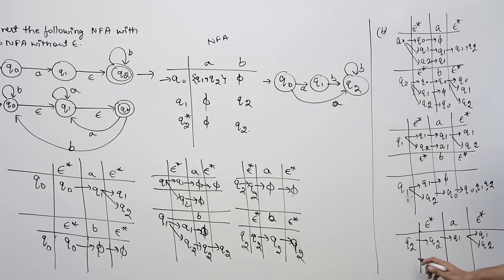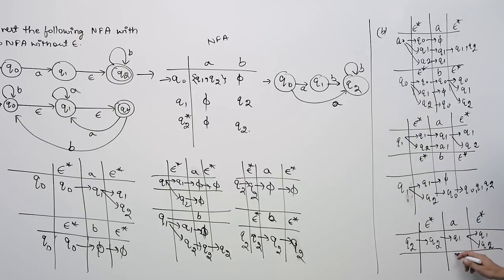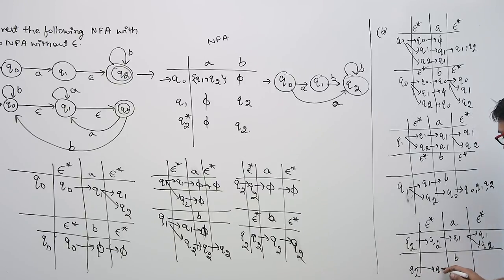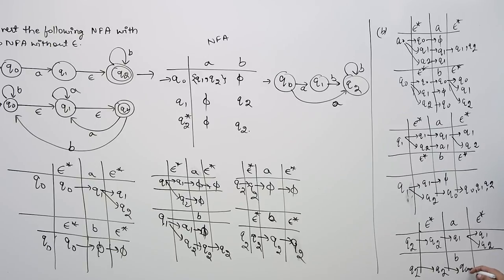For state Q2 with symbol B: epsilon closure of Q2 is Q2. On seeing symbol B on Q2, we go to Q0. Epsilon closure of Q0 is {Q0, Q1, Q2}.